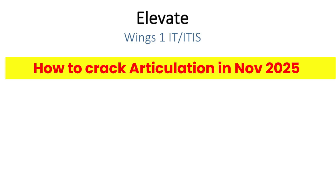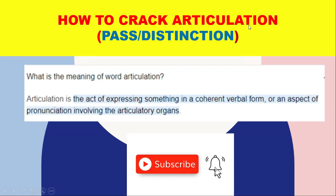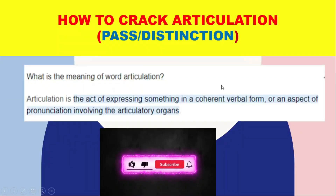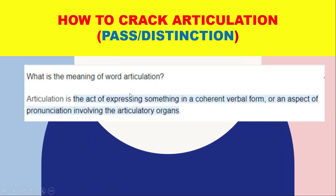Now we have to discuss how to crack articulation in the November 2025 cycle. Either pass or distinction is required. Most associates don't know what articulation means even after completing the whole course. Basically, articulation is expressing something in a coherent verbal form, or an aspect of pronunciation involving the articulatory organs — meaning we say something clearly and in a concise manner.